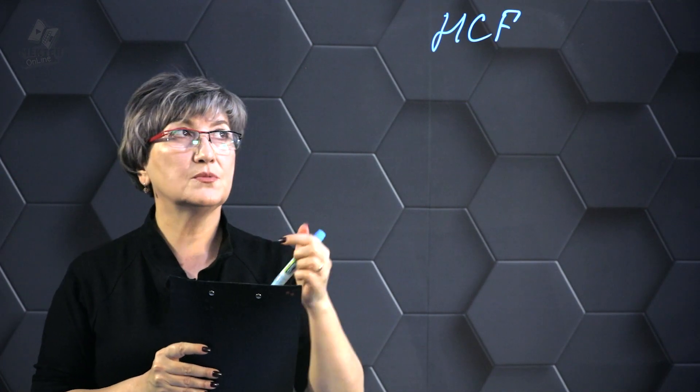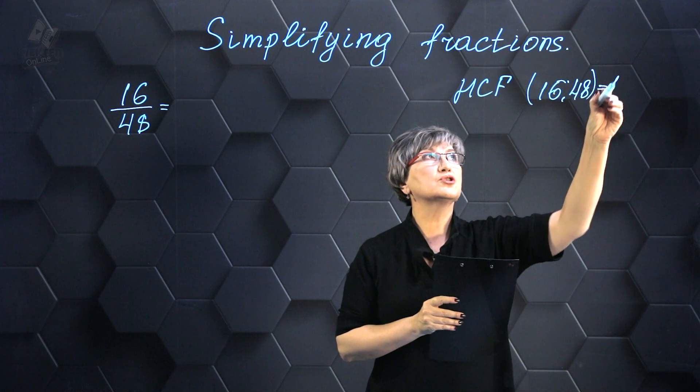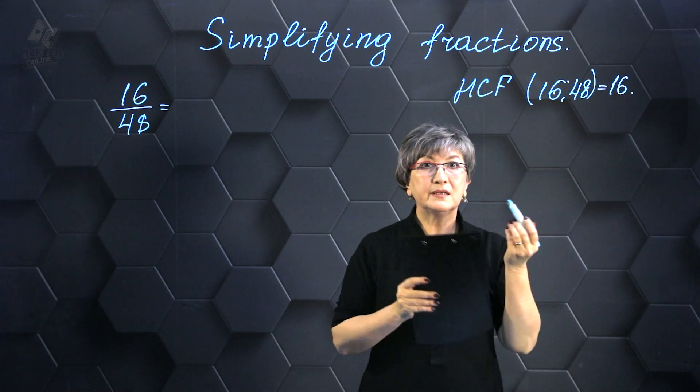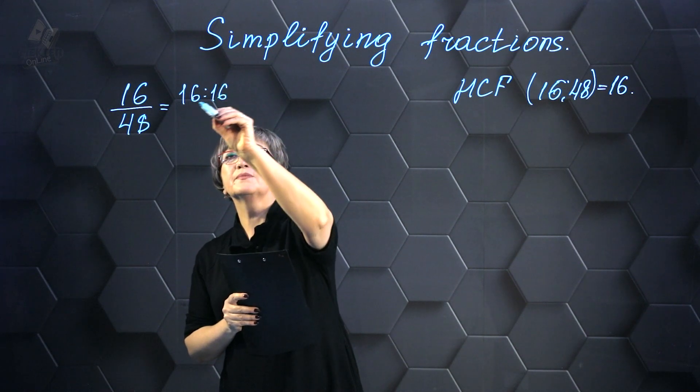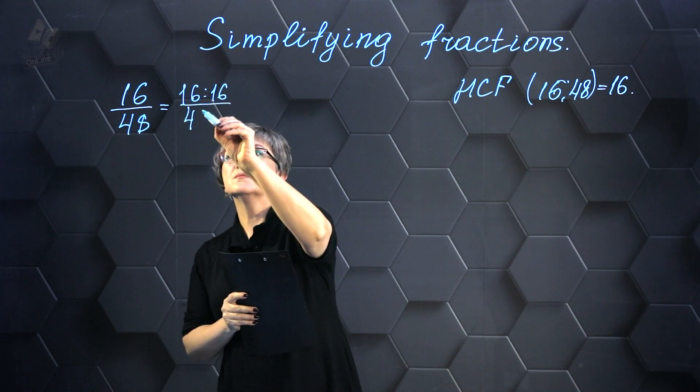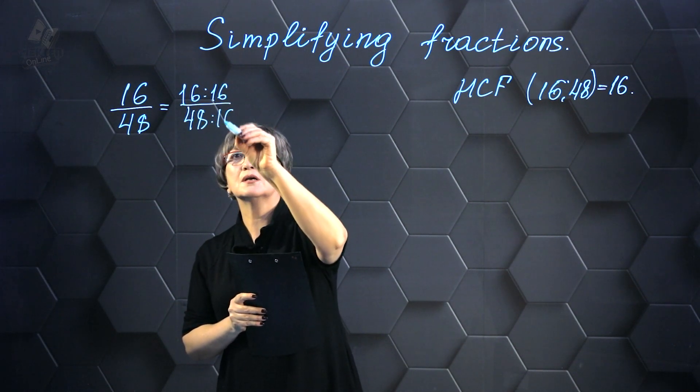the greatest common divisor of the numbers 16 and 48 is the number 16. And then I have the ability to divide 16 by 16 and furthermore, I can divide 48 by 16 as well. This allows me to calculate the quotient of these divisions and obtain the desired results.